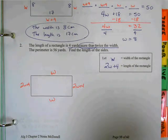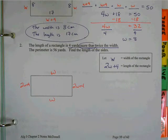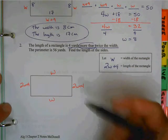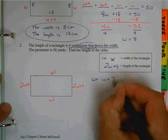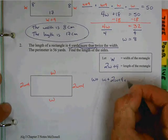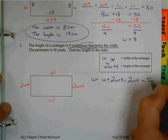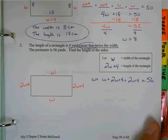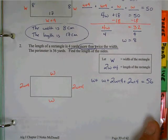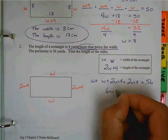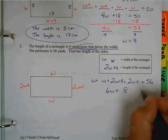So we set up our equation. Who can give that to me now? W plus 2W plus 4 plus W plus 2W plus 4 equals 56. So there's all our Ws. How many total Ws do I now have here? I have 6W plus 8 equals 56.